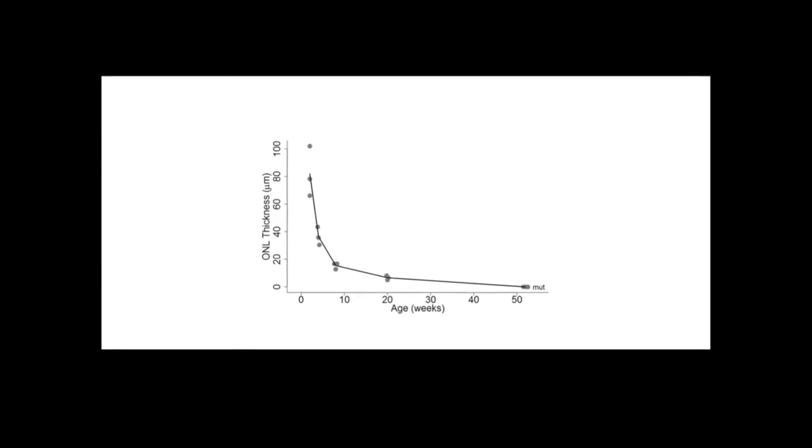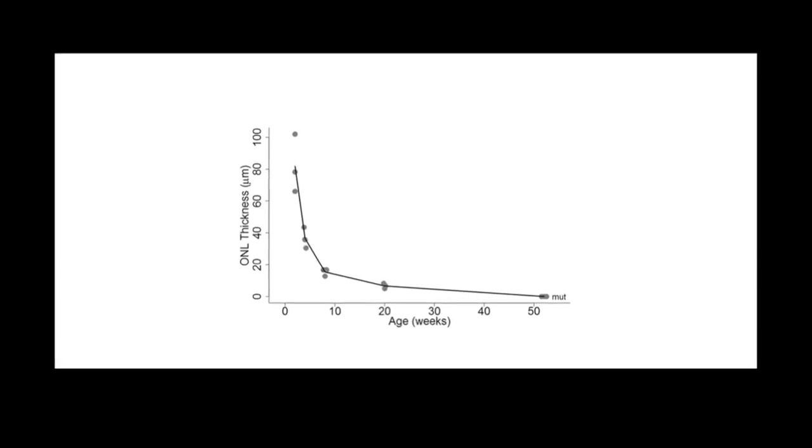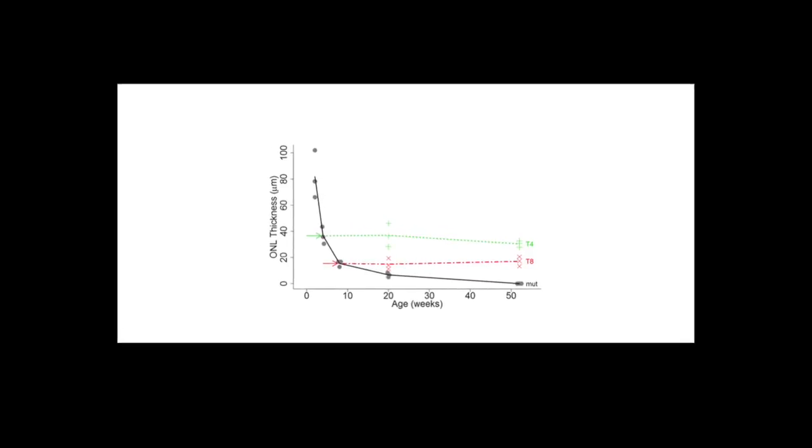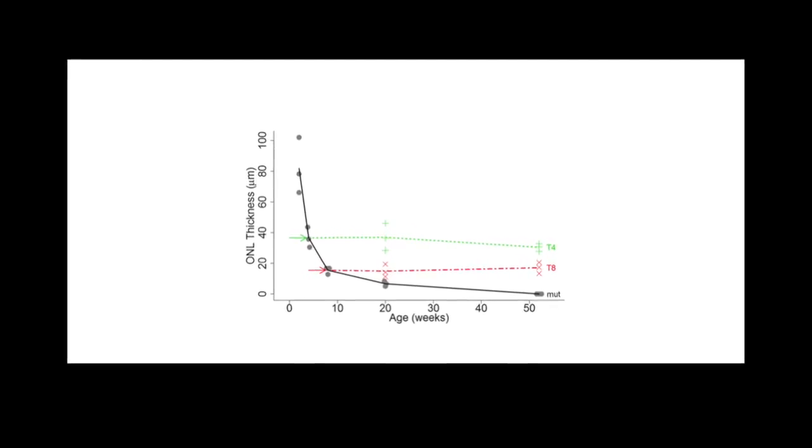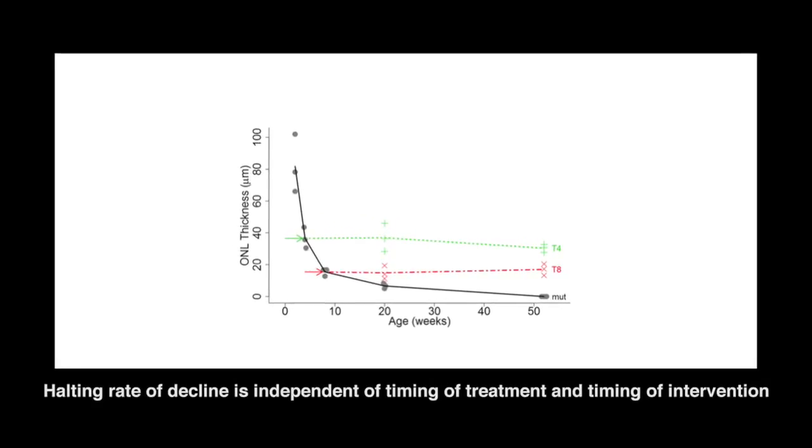In untreated mutant mice, the outer nuclear layer decreased over time, reflecting progressive degeneration of photoreceptors, which were entirely gone by one year. After treatment at mid or late disease stages, any further decrease in outer nuclear layer was prevented.